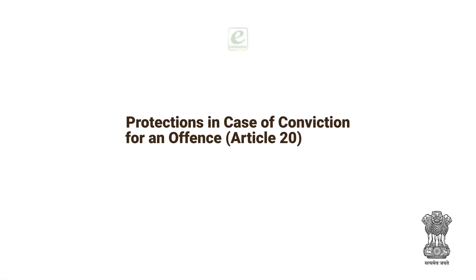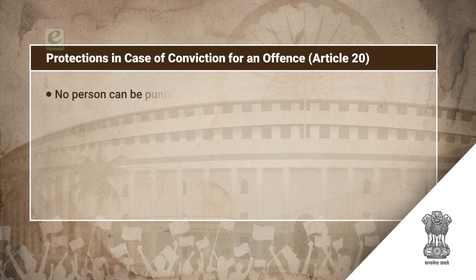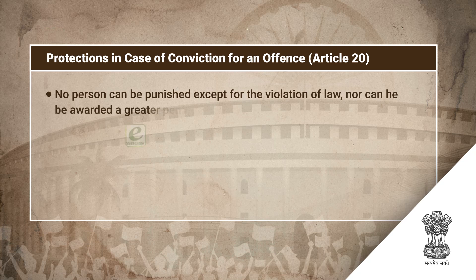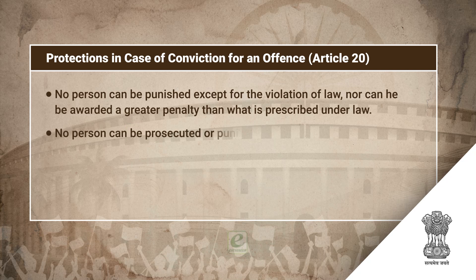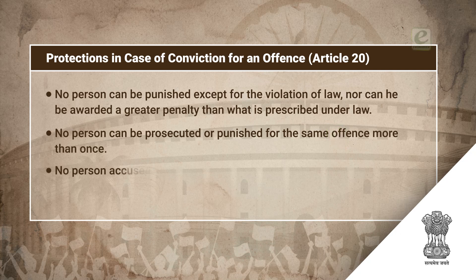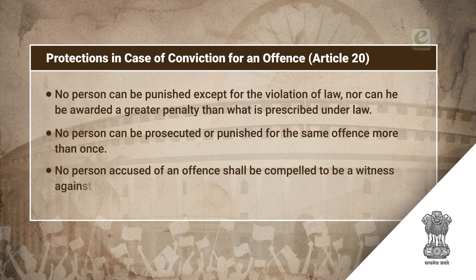Protections in case of conviction for an offence, Article 20: No person can be punished except for the violation of law, nor can he be awarded a greater penalty than what is prescribed under law. No person can be prosecuted or punished for the same offence more than once. No person accused of an offence shall be compelled to be a witness against himself.